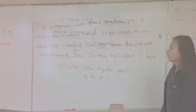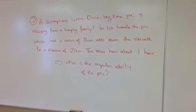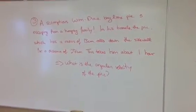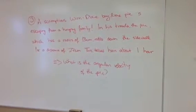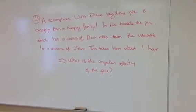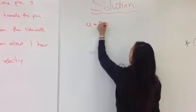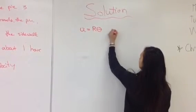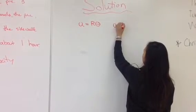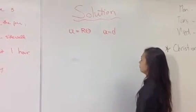A Winn-Dixie key lime pie is escaping from a hungry family. The pie, which has a radius of 13 centimeters, rolls down the sidewalk for a distance of 27 kilometers, and this takes about one hour. We need to find the angular velocity of the pie. To solve this, we'll use the arc length formula, noting that arc length equals distance.